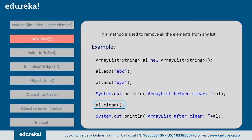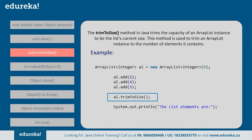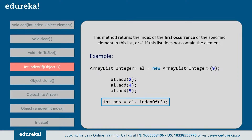Next, trimToSize(): this method trims the capacity of an ArrayList instance to the list's current size. For example, if you create an ArrayList of size 9 and add only three elements, calling trimToSize() will trim the ArrayList from size 9 to 3 — it reduces the ArrayList size to the number of elements it contains. Next, indexOf(): this method returns the index of the first occurrence of the specified element in the list. If that element is not present, it returns -1. Suppose you want to find the index of five; it will return the correct index. But if you look for three, which is not present, it returns -1.